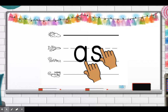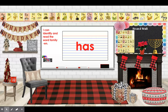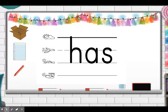Now next to that, or on a different piece of paper, let's write our next trick word. Our next trick word this week is 'has.' So let's get our cardboard, place that piece of paper on top of your cardboard, and get your red crayon ready. Write the word 'has.'